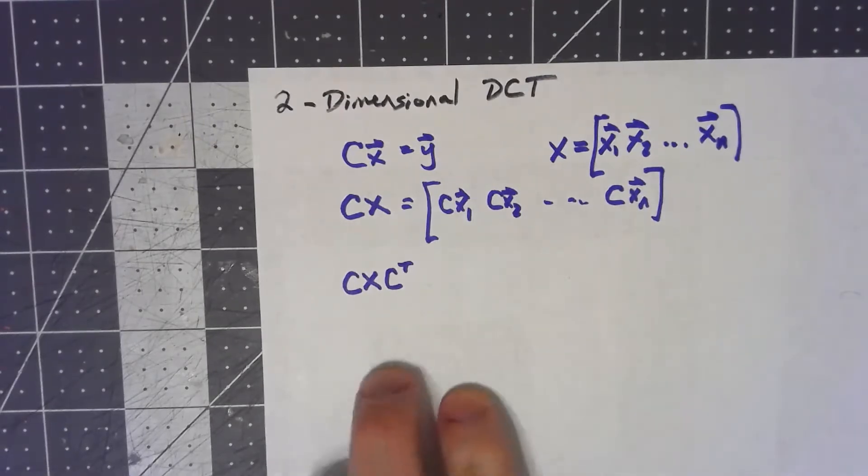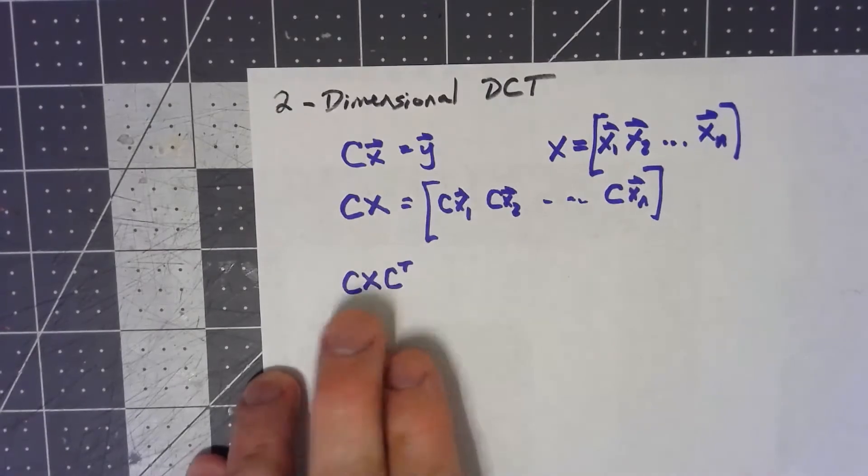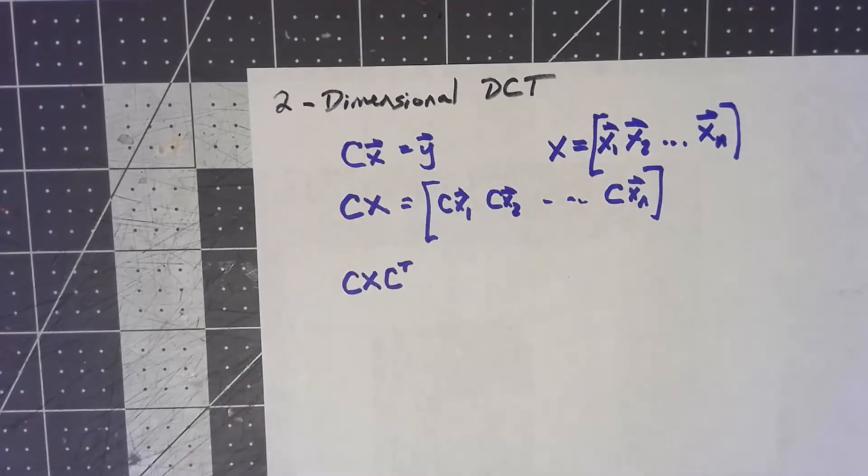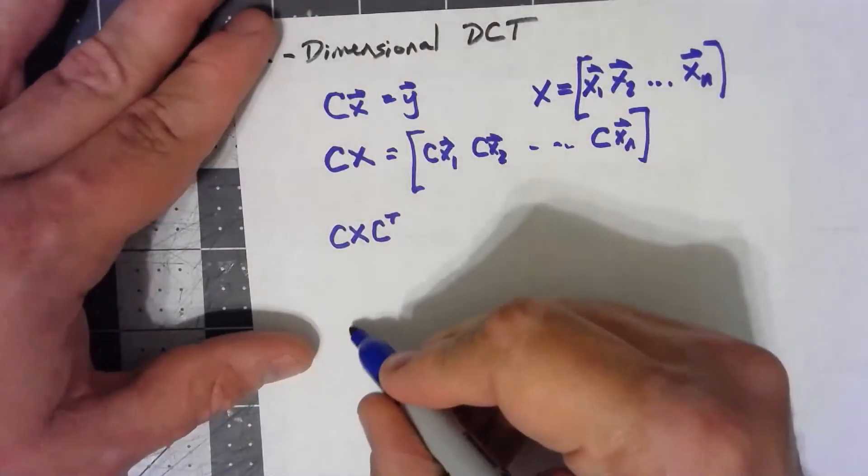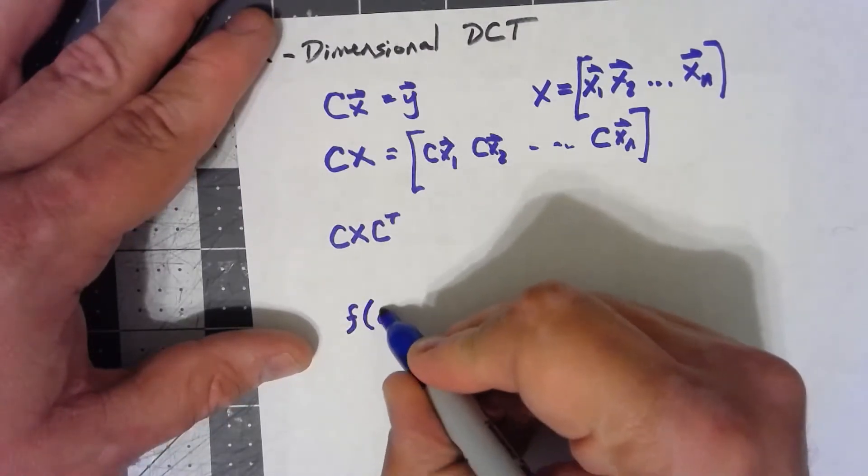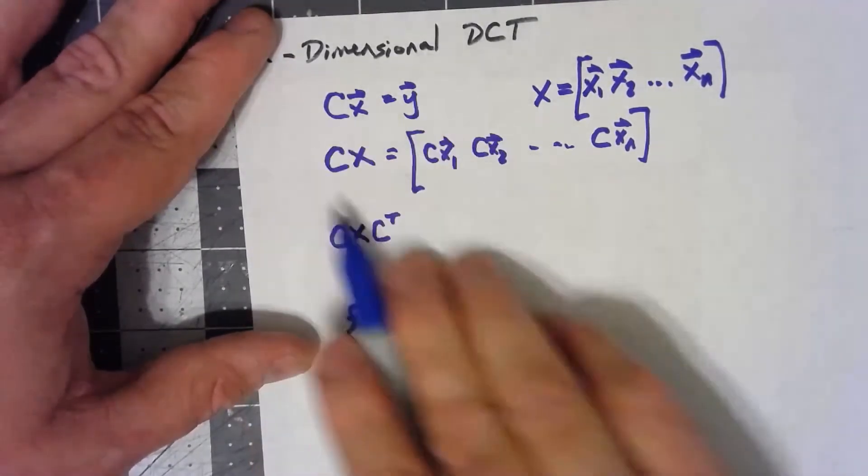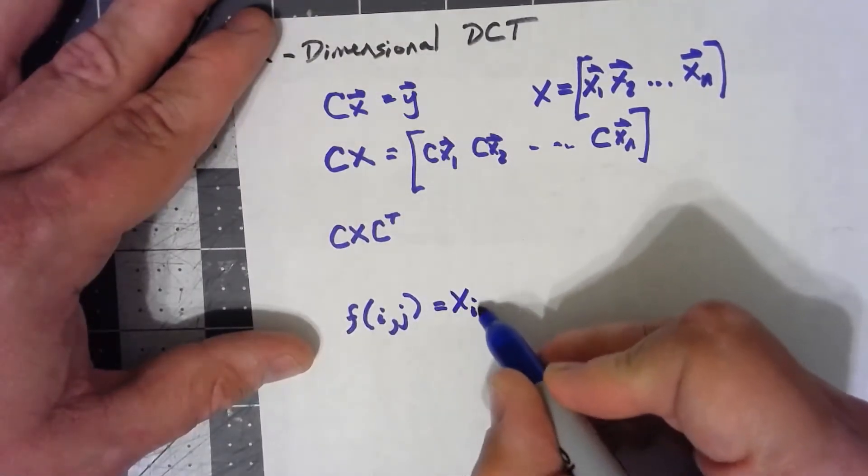Then what we have is a big matrix of coefficients. But how do we use those coefficients to get back? How do I create these cosine functions that go through the data points? Well, let's think about this. What I'm really trying to do is find some function where I plug in i and j, the coordinates in my matrix x, and it gives me that entry.